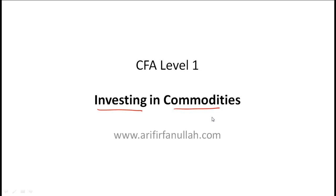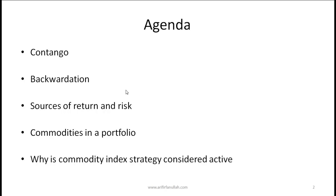In this lecture we'll talk about investing in commodities. The agenda is as follows: we will talk about contango and backwardation, which are basic terms used in the commodities context. We've already given an overview of commodities in the previous lecture, so this is building from where we left off. We will talk about the different sources of return and risk when we invest in commodities, then commodities in a portfolio context, and finally we will discuss why a commodity index strategy is considered active rather than passive.